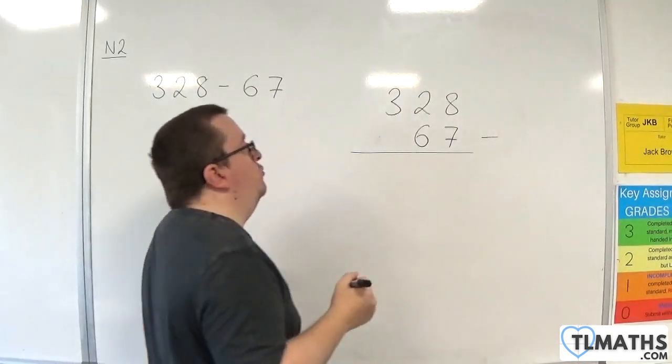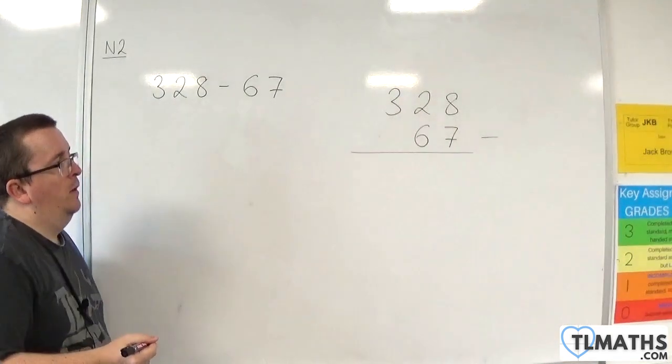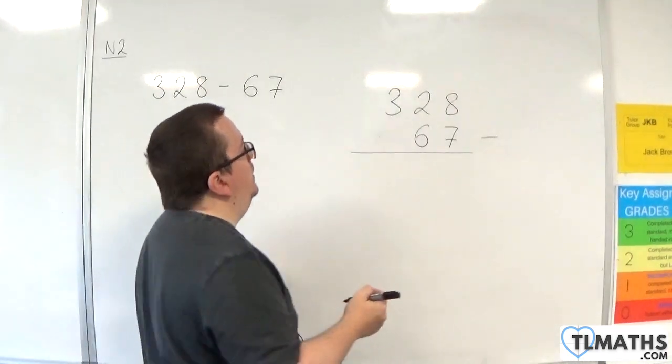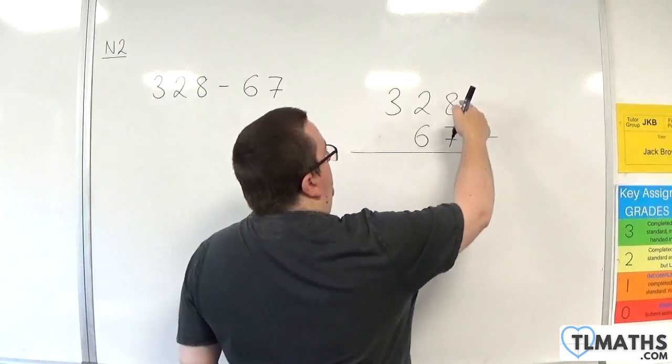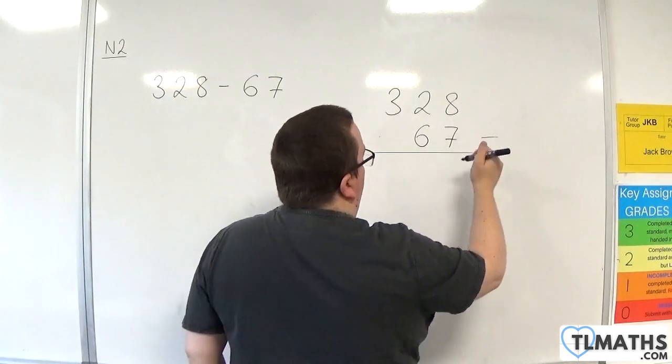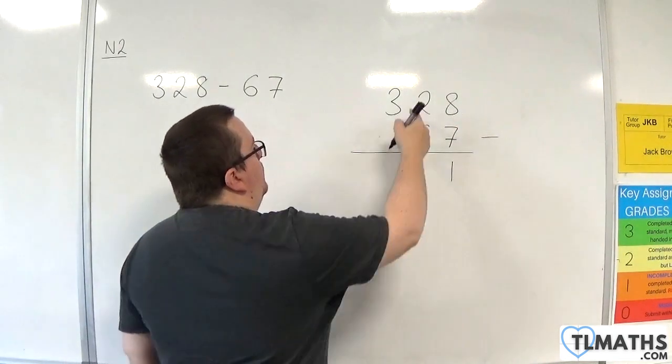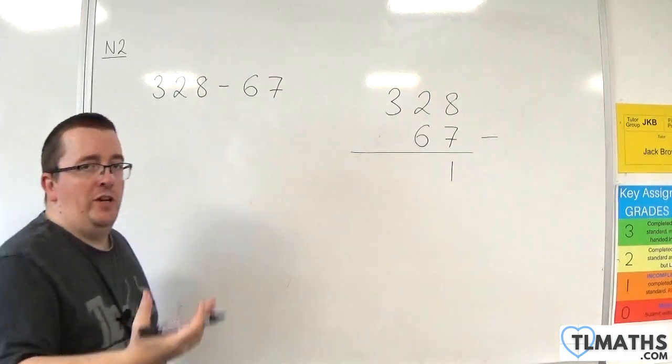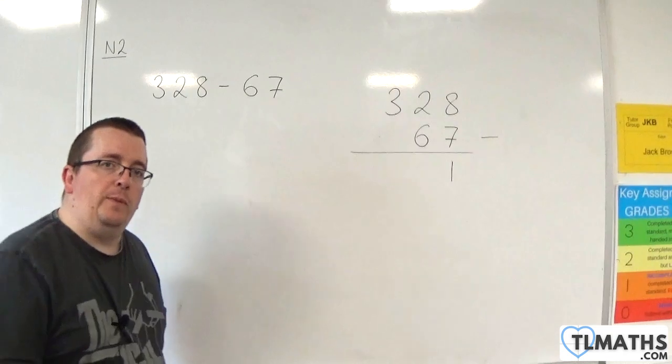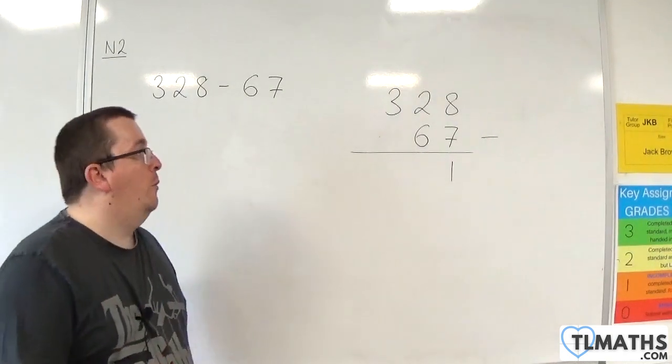I'm going to draw a line and then I'm going to have my subtraction. So it works in a very similar way to start off with. We've got 8 take away 7, which is 1. Then we need to do 2 take away 6. Now, unfortunately, we can't do 2 take away 6 without going into negative numbers. That's not what we want to do.